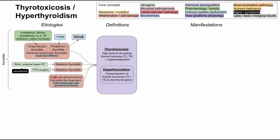Another histological category is subacute granulomatous thyroiditis, also called De Quervain's thyroiditis. On histology you'll see multinucleated giant cells, granulomas, and fibrosis. A few viral infections predispose you to this condition, including mumps virus, Coxsackie virus, influenza, echovirus, and adenovirus — an association worth knowing.